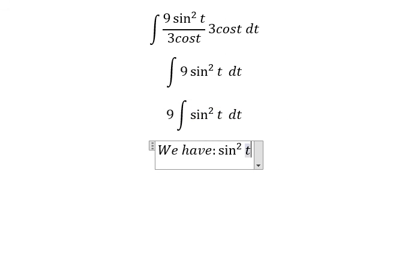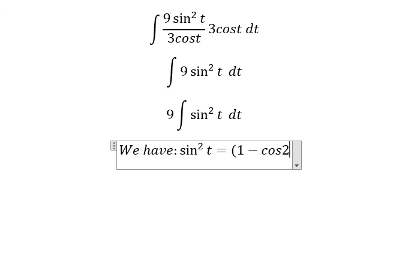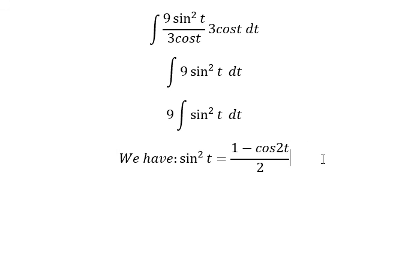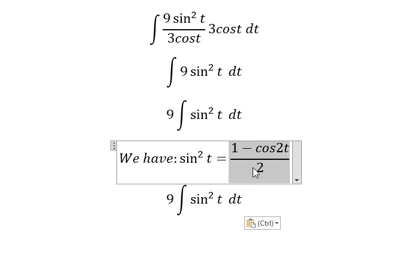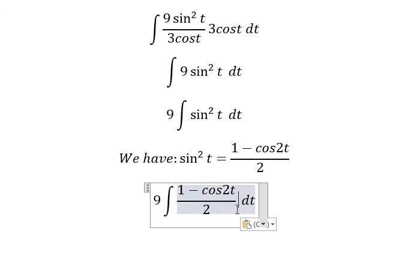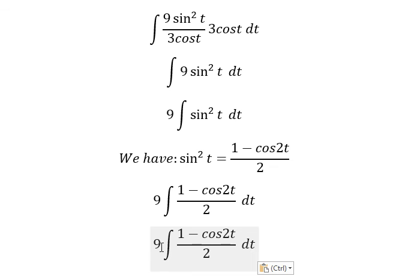Sine² t, that is 1 minus cos 2t over 2. So I will put this one in here. So I will put number 2 outside.